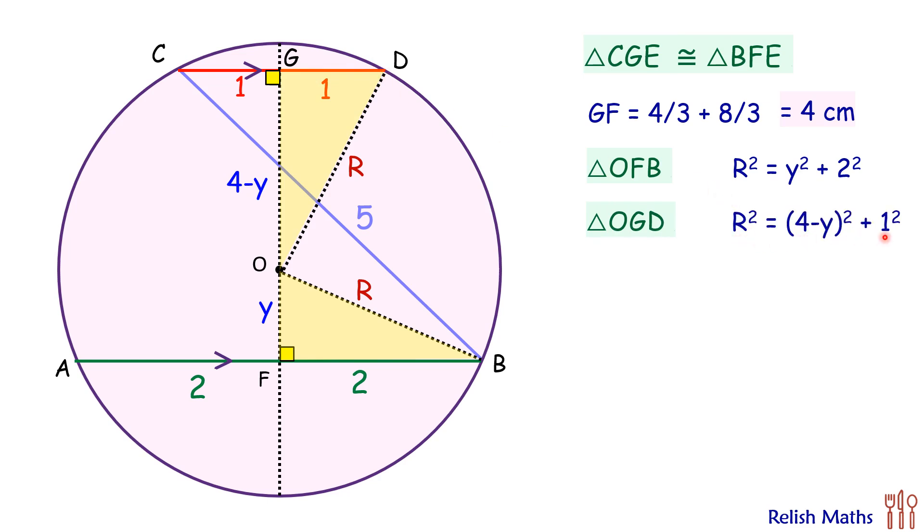In the second equation, we'll put the value of R squared from the first equation. Both sides, y squared will get cancelled. Simplifying, we'll get the value of y as 13 by 8 centimeters.